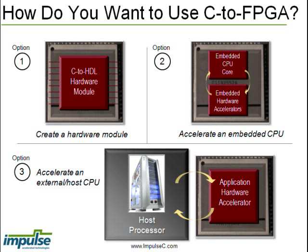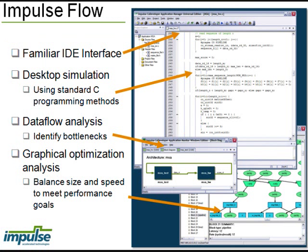The Impulse design flow involves the use of standard C development tools, such as GCC and GDB for debugging purposes, as well as the Impulse-C compiler environment for partitioning, parallelizing, and optimizing applications. The Impulse design environment also supports desktop simulation through standard C tools and standard C debugging environments.